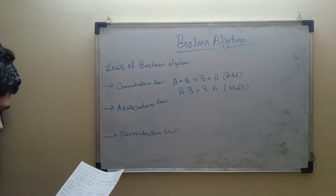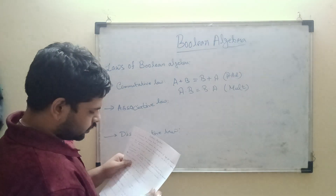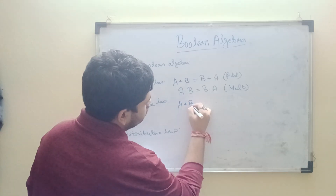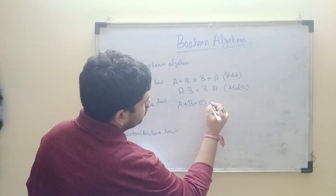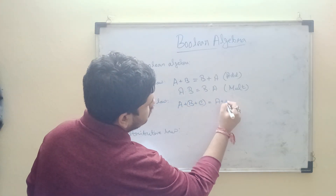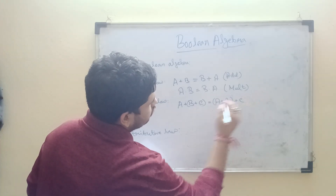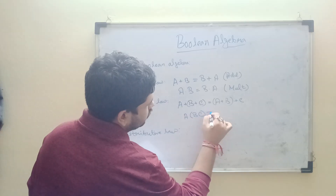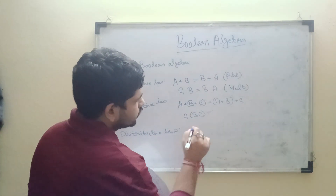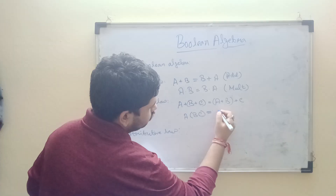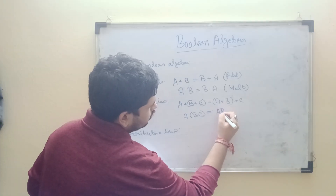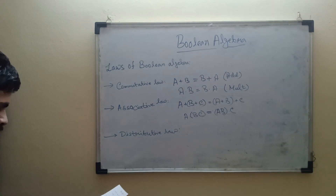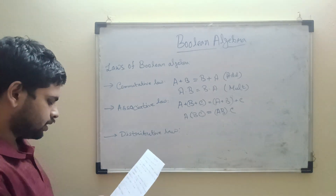The second law is the associative law, which applies to three variables. For addition: (A + B) + C = A + (B + C). For multiplication: A·(B·C) = (A·B)·C. The grouping of variables does not affect the result.